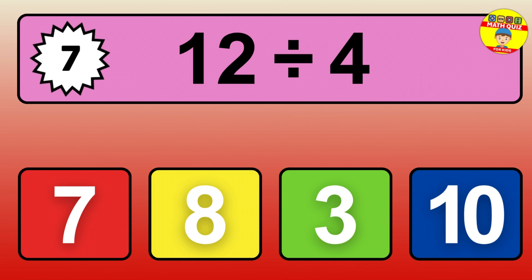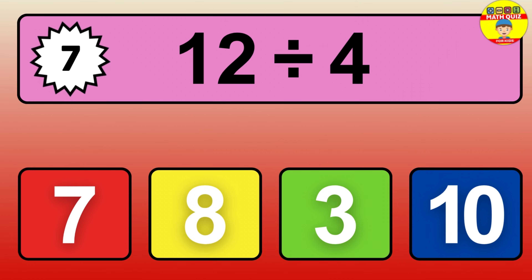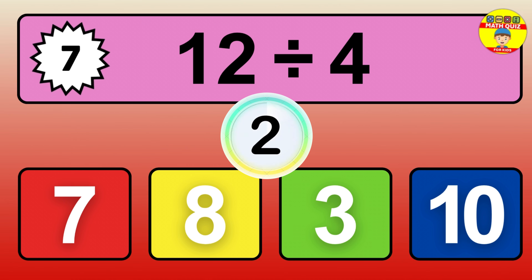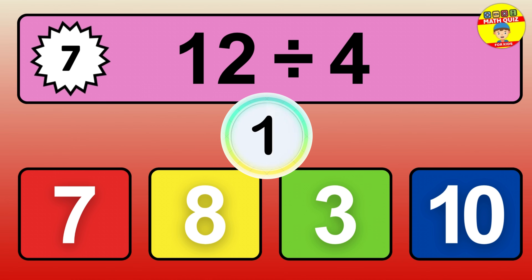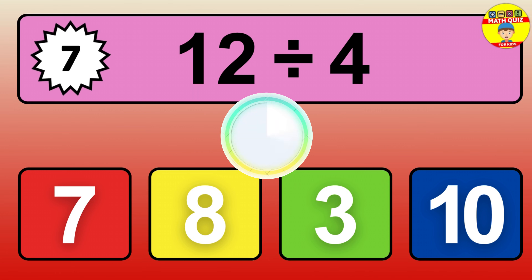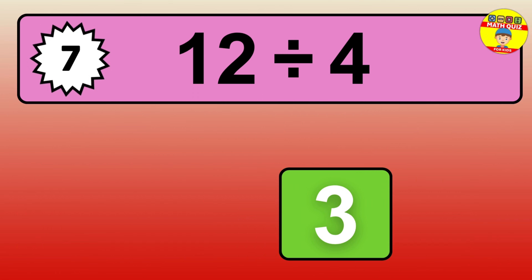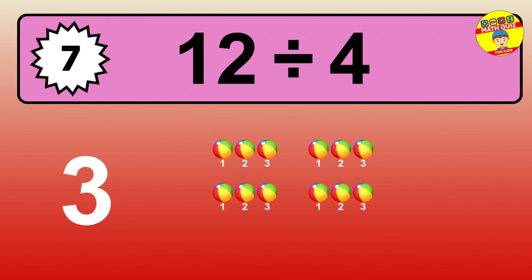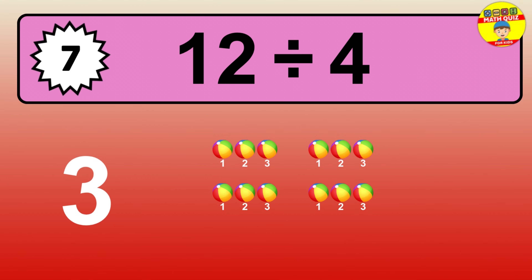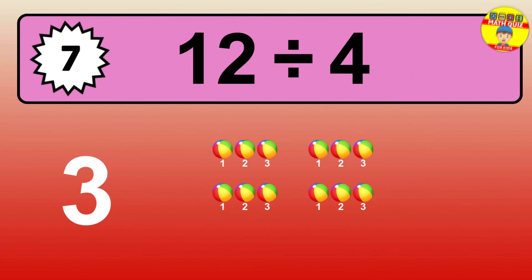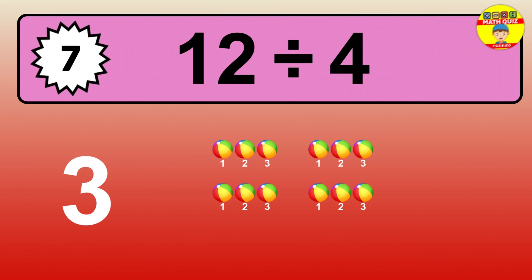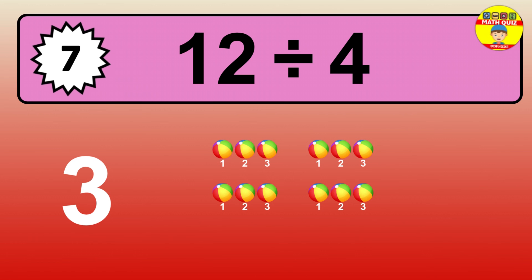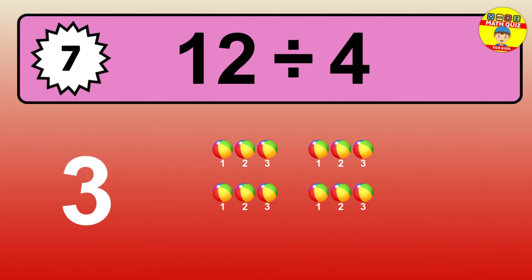12 divided by 4 is… time to think. Let's go to the solution. Divide the number 12 by 4. Each group contains 4 units, so dividing 12 by 4 results in 3 equal groups. Thus, the result is… 12 divided by 4 equals 3.